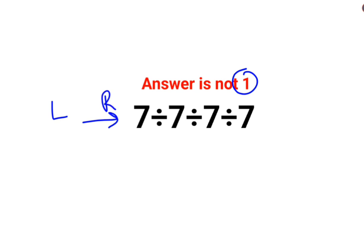Follow the pattern of left to right. So whatever operation happens first on your left-hand side has to be done first. Seven divided by seven is one, divided by seven, divided by seven. So understand, whenever you